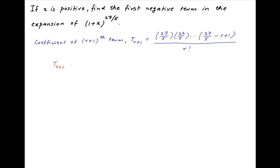Now the coefficient of the r plus 1th term t r plus 1 is less than 0 when in the numerator the term 27 upon 5 minus r plus 1 is less than 0, or in other words r is greater than 27 upon 5 plus 1, which is equal to 32 upon 5.